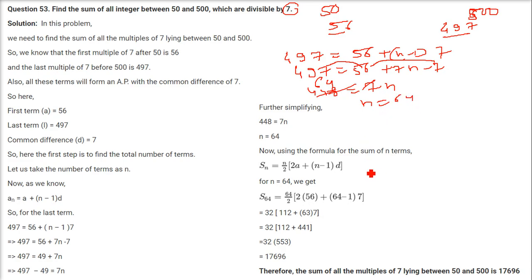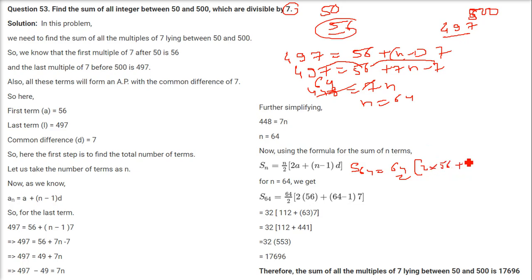To find S₆₄: S₆₄ = (64/2) × [2×56 + (64−1)×7] = 32 × [112 + 63×7]. Solving this expression gives 17696.